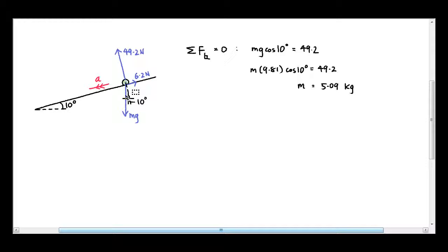You have to first figure out that this angle here is the same as this angle here, 10 degrees. So mg cos 10 degrees is balanced by 49.2 N.